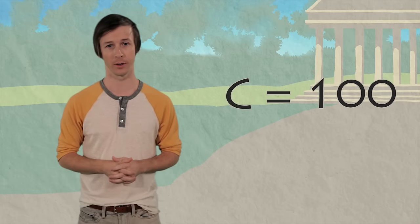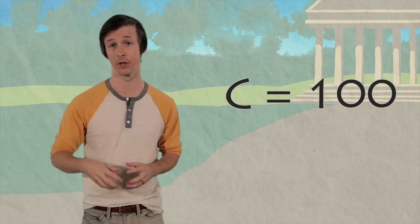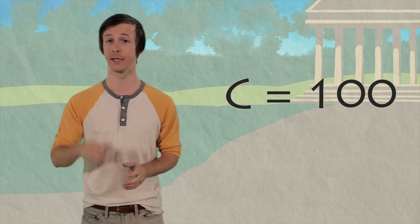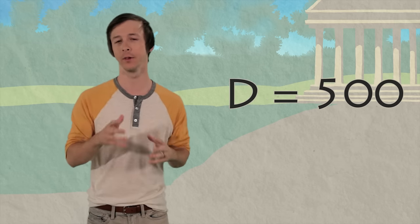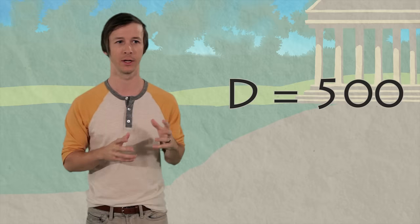The letter C stands for the number one hundred, like how there are one hundred cents in a dollar or one hundred years in a century. And the letter D stands for five hundred, which, yeah, I don't really have a trick for that one either.